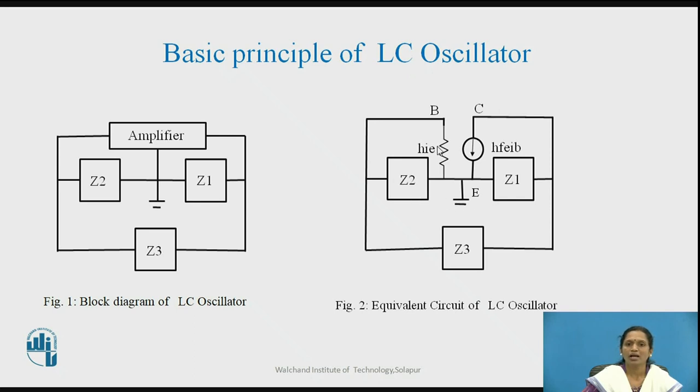Z2 and HIE are parallel, which is in series with Z3 and that whole combination is in again parallel, which will give the output impedance of LC oscillator circuit. So, basic principle behind the LC oscillator is nothing but